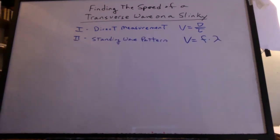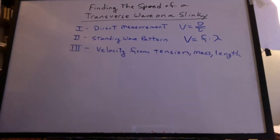Method two was a standing wave pattern. Just use velocity equals frequency times wavelength. While part three is the heart of this experiment, we need to find the velocity from the tension, the mass, and the length. And that's going to require some explaining.